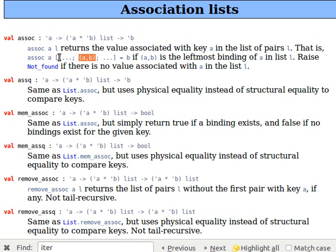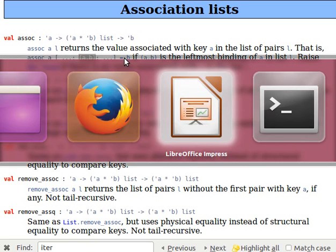For example, if we have a list of a lot of pairs and one of them is A and B, if I use A as the key here then it should return B. Let me show you something interesting.